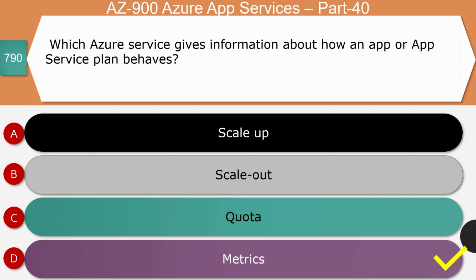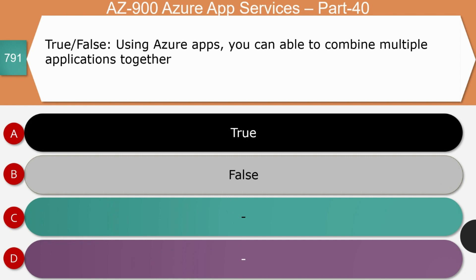Next question — true or false: using Azure Apps you are able to combine multiple applications together. The right answer is true. One of the best features is being able to combine multiple applications together. Previously, Azure Worker Roles required each app to have its own servers. You can save money by switching to Azure App Services and combining applications. If you want to separate them, you can put them in a different App Service Plan.